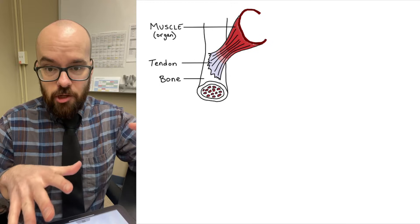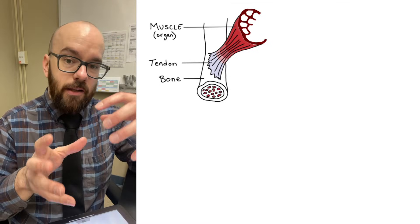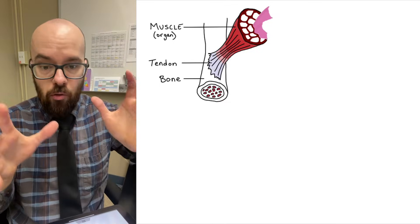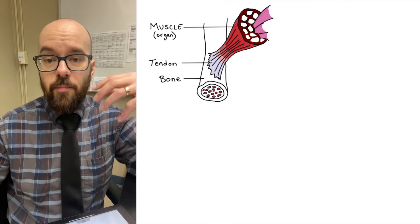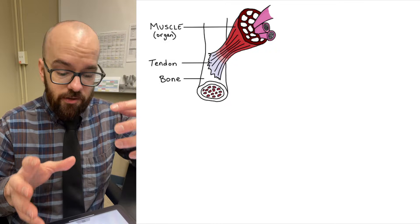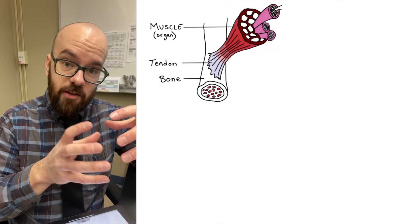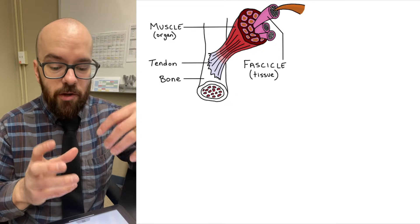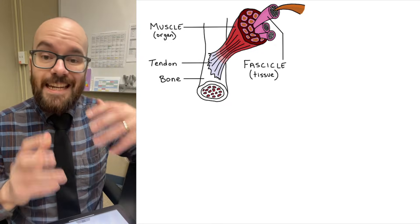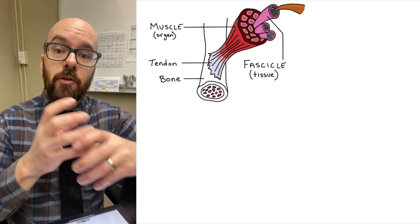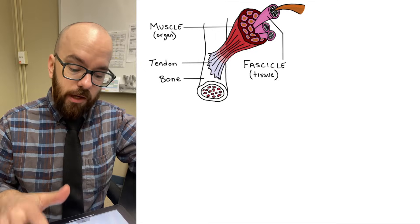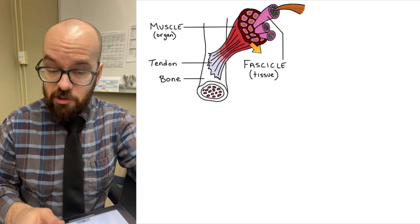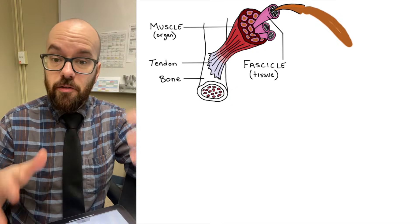Right now, being drawn is a cross-section of that muscle. We're going to break it down into the next level of organization, which will be the tissue level. Now, the muscle is the whole organ, and drawn in pink here is something that we call a fascicle. Each of our skeletal muscles is made up of a bunch of fascicles that are bundled together to form the whole muscle. So each of those strands coming out of this muscle, covered in pink, is a fascicle. Each muscle fascicle is a bundle of cells.